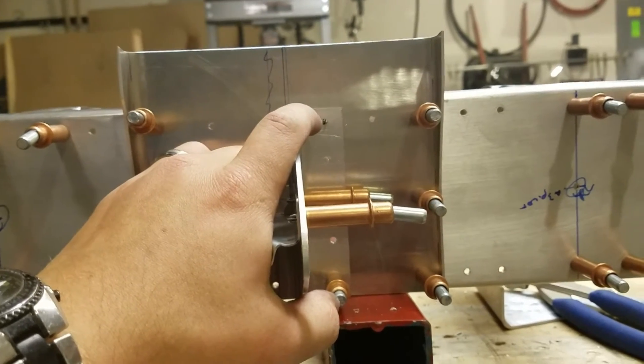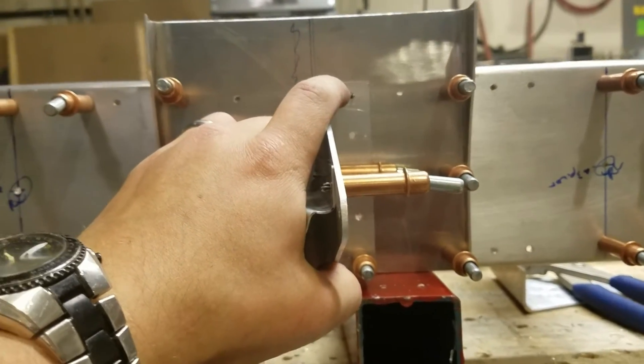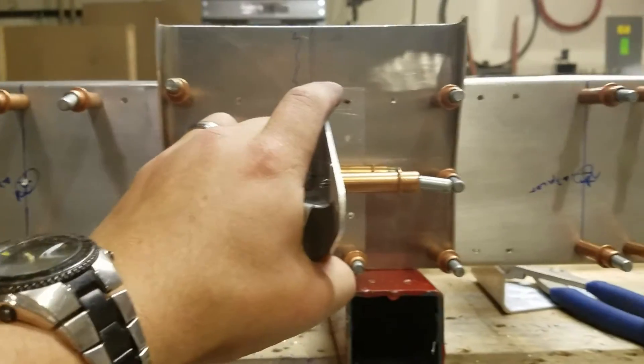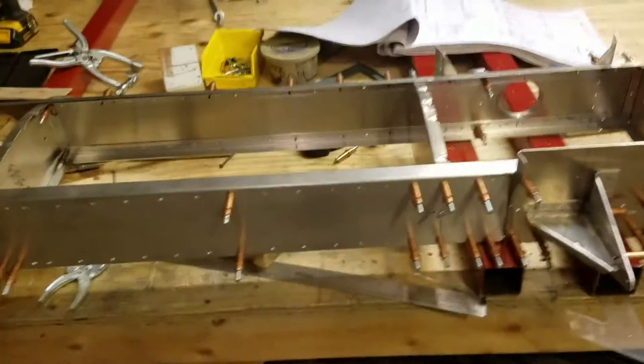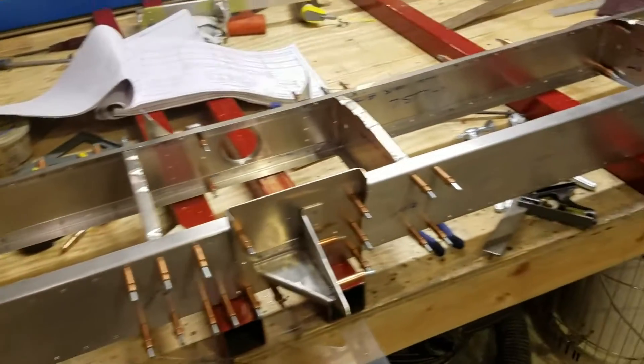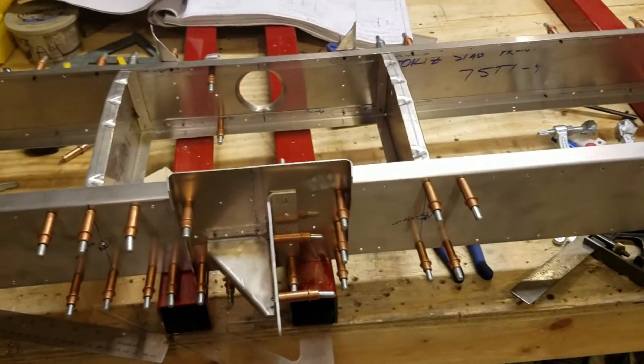So everything else gets drilled out to a 5, these two holes get drilled out for the bolt specified in the plans, and then that's it. Not much else to show here. I've got to double check and see if it calls for riveting this together before actually putting the skin on it.